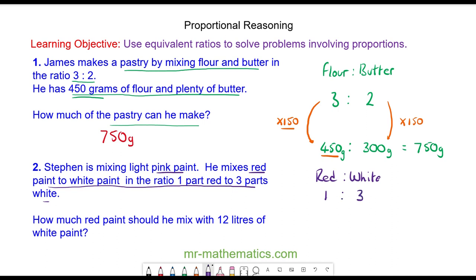Now we have to work out how much red paint he should mix with 12 litres of white paint, so the 12 litres goes on the side of white. Using equivalent ratios we can multiply the 3 by 4 to make 12. We do the same to the other side and 1 times 4 is 4. So he will need 4 litres of red paint.